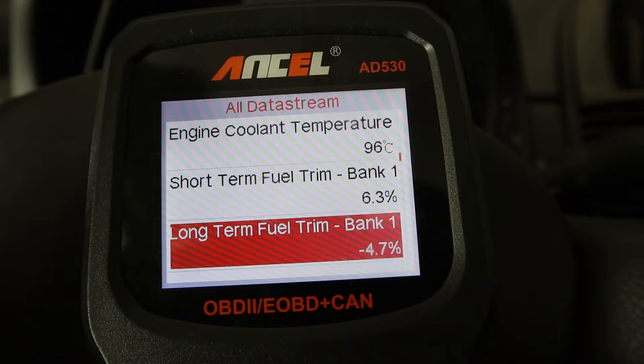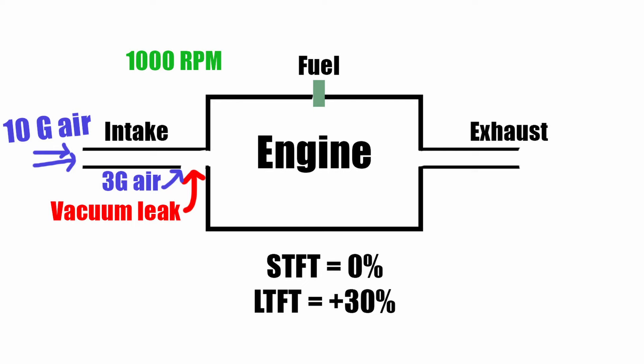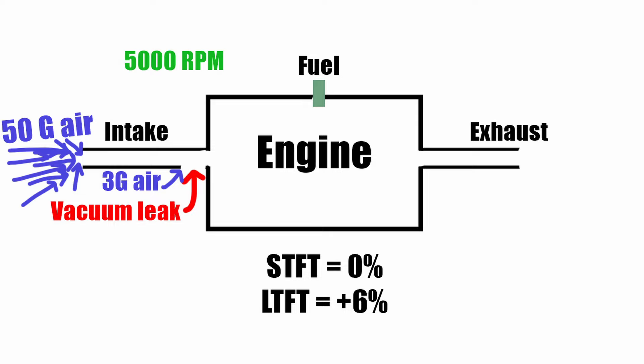Let me give a quick example. Say you are idling at 1000 RPM and you have 10 grams of air coming in, and you also have a vacuum leak which brings in 3 grams of air — so you have 13 grams of air but your ECU only knows about 10 grams. That vacuum leak is causing 30 percent of extra air, so you can see your fuel trim be at 20 to 30 percent to compensate. But when you press on the gas pedal at 5000 RPM you can have 50 grams of air coming in, and those 3 grams don't do much, so your fuel trim would be at zero.